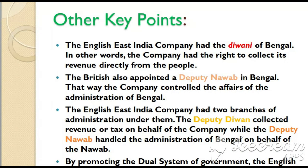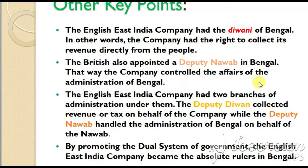During the dual system of government in Bengal, the English East India Company had the Diwani of Bengal — in other words, the company had the right to collect revenue directly from the people. The British also appointed a deputy Nawab in Bengal. The company controlled the affairs of the administration of Bengal through two branches: the deputy Diwan collected revenue on behalf of the company, while the deputy Nawab handled the administration on behalf of the Nawab.